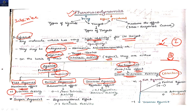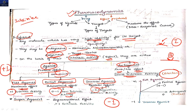A full agonist produces maximum effect and has an intrinsic activity value of +1. A partial agonist has some maximal effect — its intrinsic activity is between 0 and 1, meaning low intrinsic activity. An inverse agonist produces an opposite effect, with an intrinsic activity value of -1. There are also super agonists, which produce more than maximum effect, with an intrinsic activity value greater than 1.